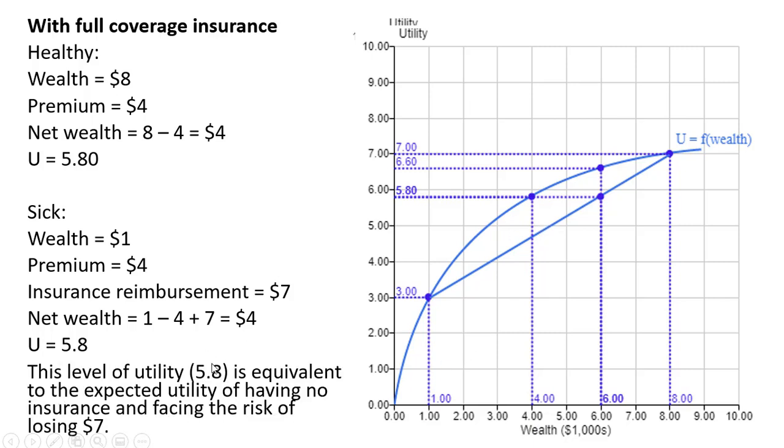So this level of utility, 5.8, is equivalent to the expected utility of having no insurance and facing the risk of losing $7. Okay, that's it.